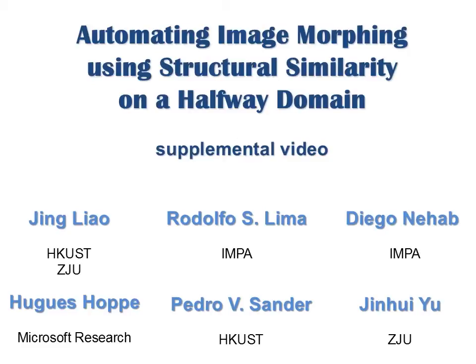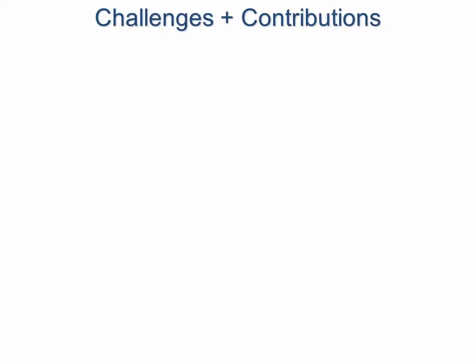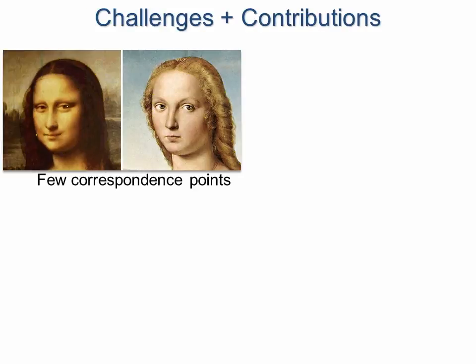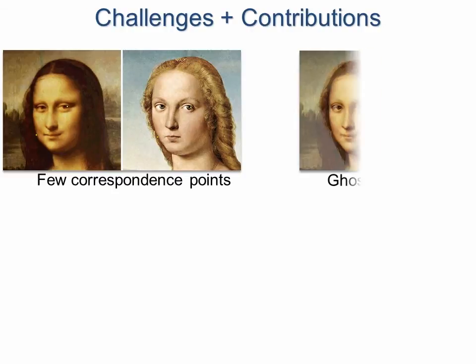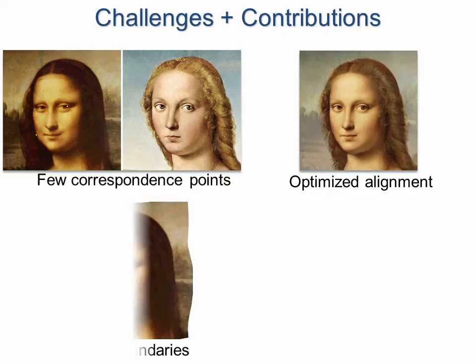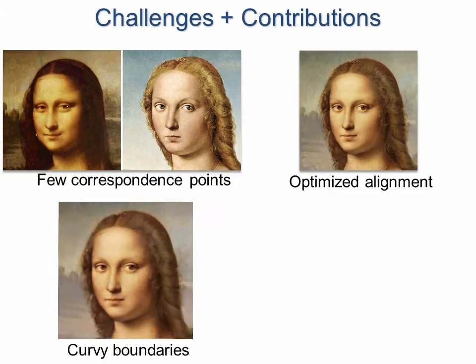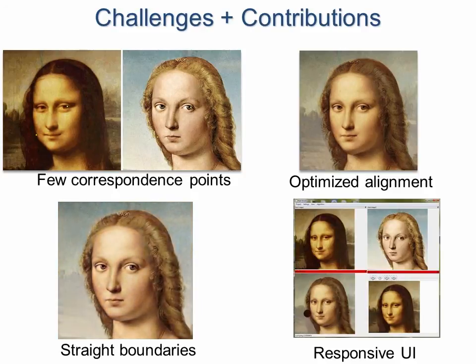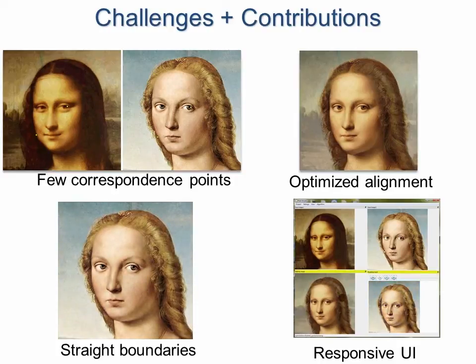In this video, we describe the basic algorithm of our optimized image morphing technique. We address several challenges. Our optimization technique lets the user specify very few correspondences. To avoid ghosting artifacts, it provides per-pixel alignment based on structural similarity. To avoid boundary artifacts during morphing, it ensures that the entire rectangular domain of the image is well defined. Finally, it enables the user to interactively and effectively control the appearance of the morph.